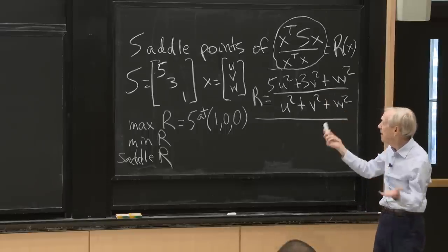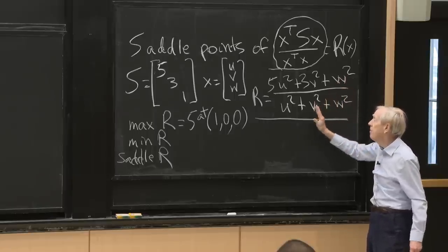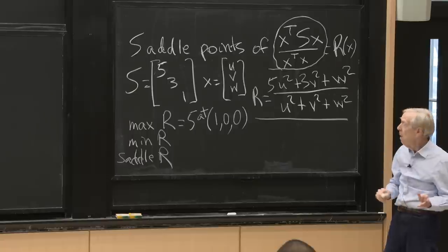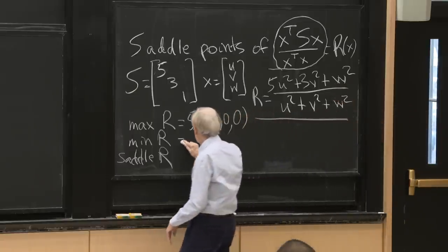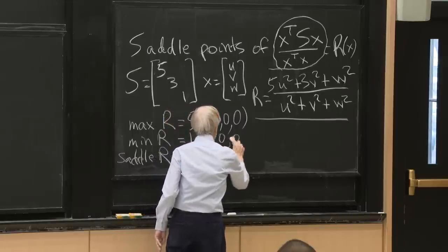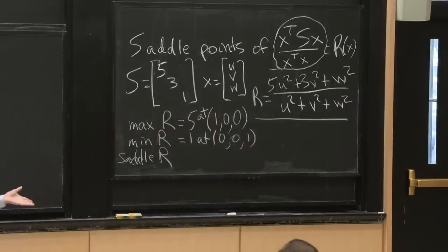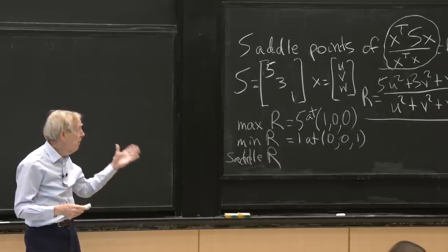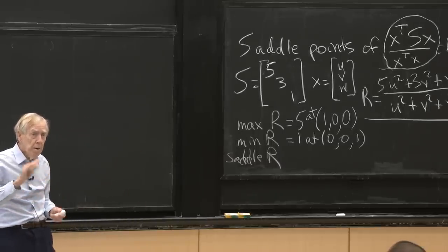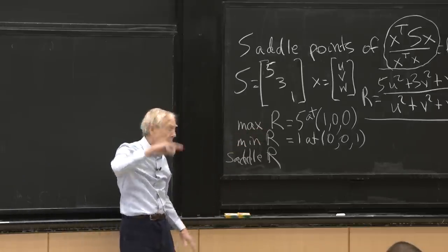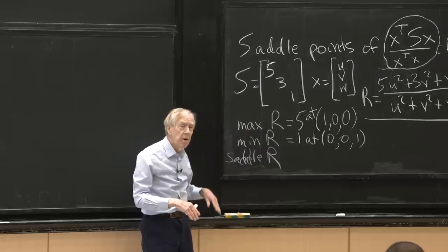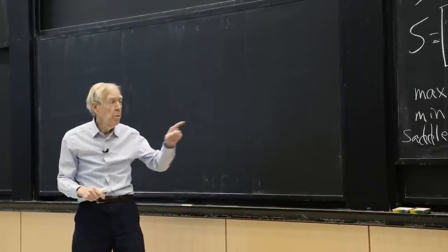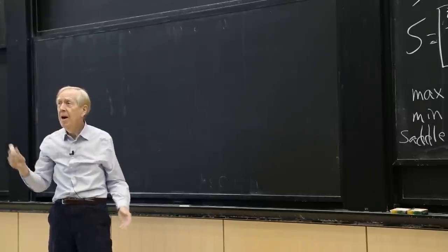And what about the minimum of r, the minimum of this ratio? How do I make that ratio small? Well, I load stuff onto w instead of loading it up onto u. It's clear. So what is the minimum value of r? 1. Because I'll load everything into w. So the minimum value will be 1. And that will be at the vector 0, 0, 1. I've loaded everything there. And then the point of this short discussion is, is there another place where the derivatives, first derivatives of r are all 0? Of course, the first derivatives are 0 at the max, at the min. But we also, we have three variables here, and we're going to find the third point. And what is that point, you probably guess. And what will be the saddle value?